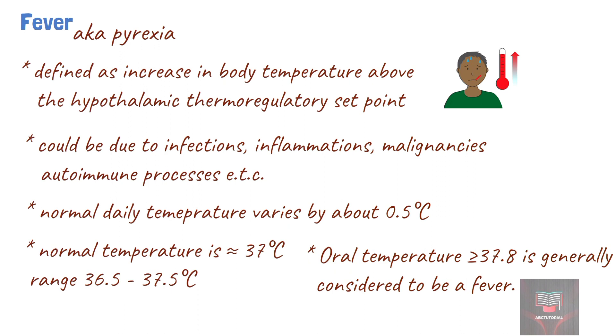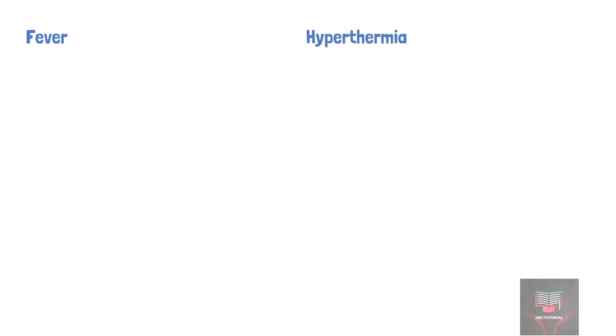Fever is not to be confused with hyperthermia. In fever, the thermoregulatory center in the hypothalamus sets the body's temperature target to a new higher set point, like setting the thermostat to a new higher value. While in hyperthermia, the set point does not change; however, the body is unable to maintain this set point and thus the temperature of the body rises. That is, hyperthermia is failure of the body's thermoregulatory mechanisms.